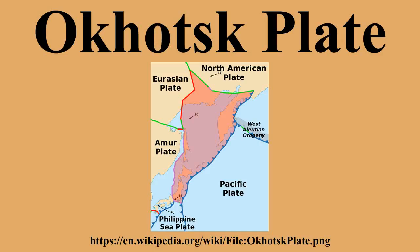The boundary between the Okhotsk plate and the Amur plate might be responsible for many strong earthquakes that occurred in the Sea of Japan as well as in Sakhalin Island, such as the Mw 7.1 earthquake of May 27, 1995 in northern Sakhalin. The earthquake devastated Neftegorsk, and the town was not rebuilt after the earthquake. Other notable intraplate earthquakes, such as the 1983 Sea of Japan earthquake and the 1993 Hokkaido earthquake, triggered tsunamis in the Sea of Japan.